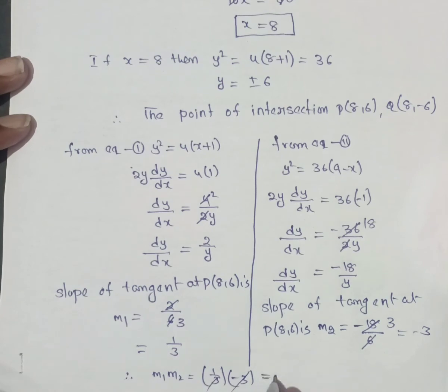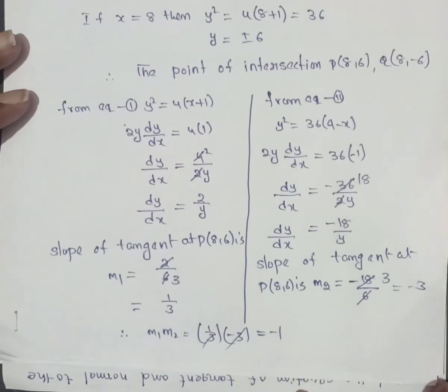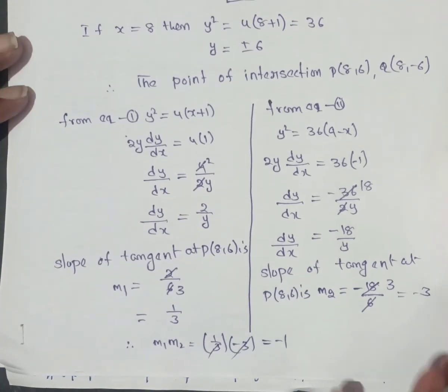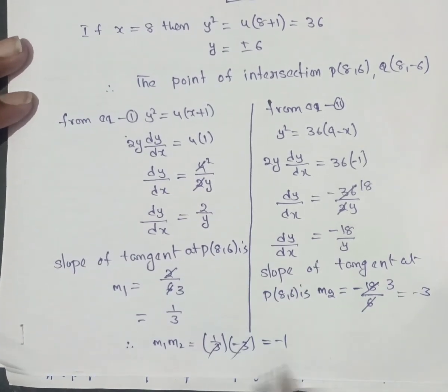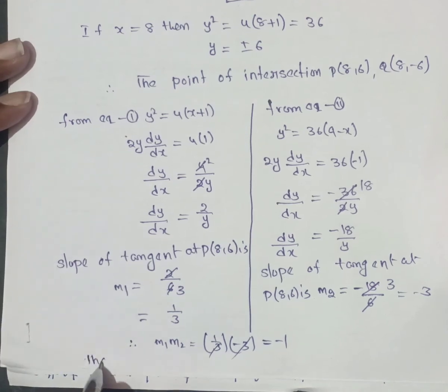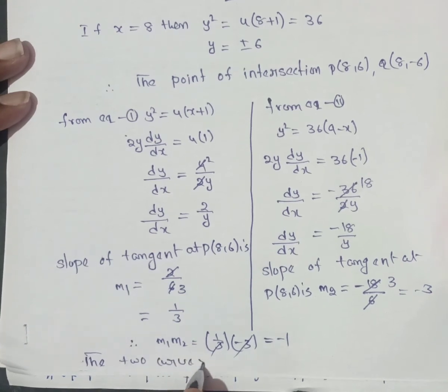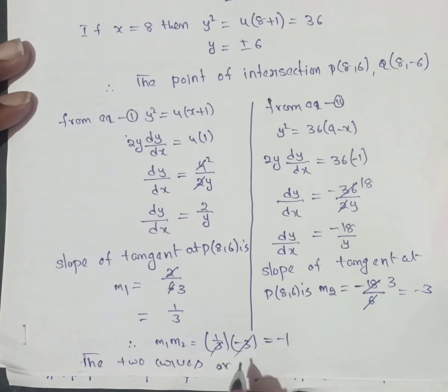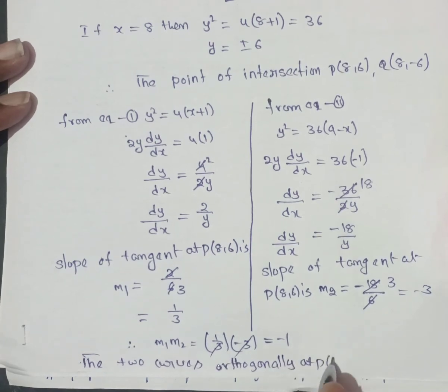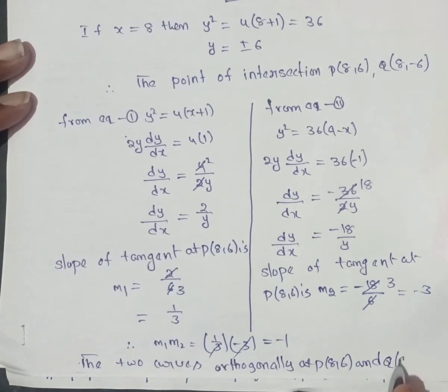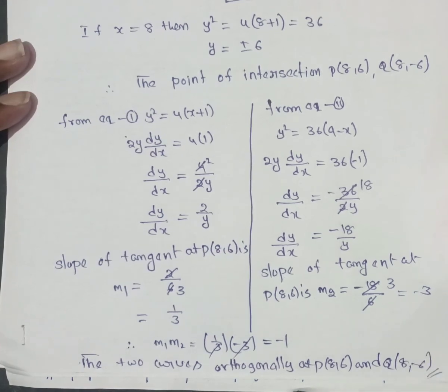So M1 M2 value is minus 1, and the two curves are orthogonal at P of 8, 6 and Q of 8, minus 6. Okay, clear. Thank you.